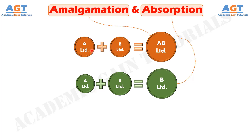Amalgamation is the legal process in which two or more companies combine themselves to form a new company. On the other hand, absorption is when two or more companies are combined into an existing company.